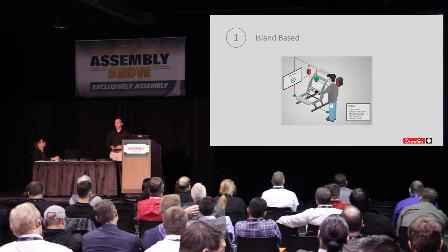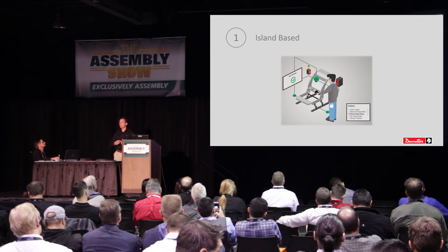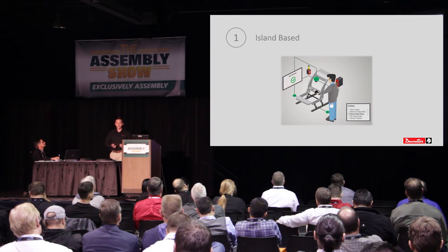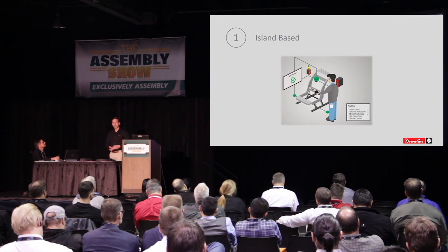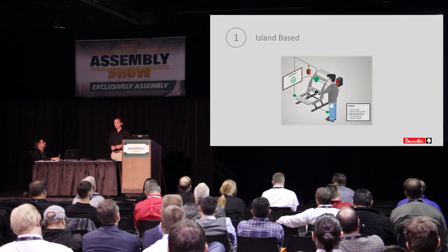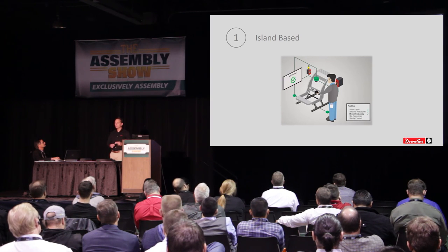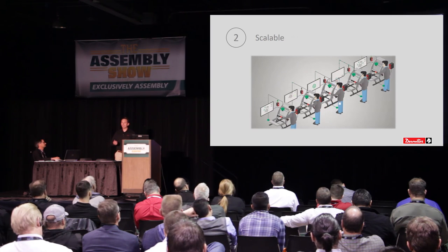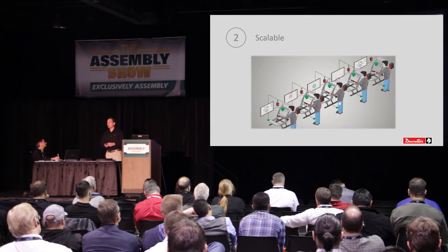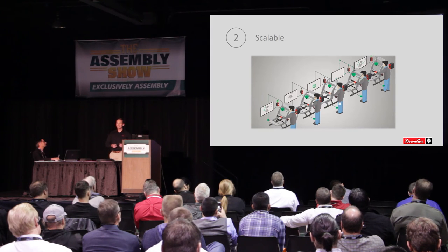There are three fundamental principles to PivotWare that make it unique and competitive. First, it's island-based — each station has all the processes for all the models, all the potential operators, all the potential components stored within the station. So it's completely resilient to any network failures; PivotWare will operate whether or not we have communication to our higher-level systems. That means we can have higher uptimes and continue to produce in non-perfect conditions. And because it's island-based, we can also scale it — implementing PivotWare one station at a time or outfitting an entire assembly line.